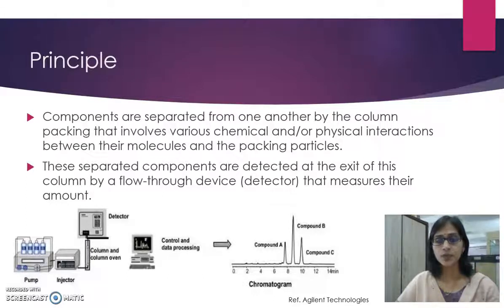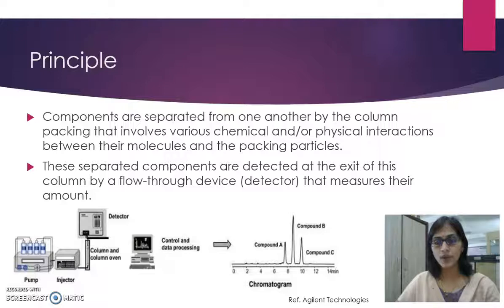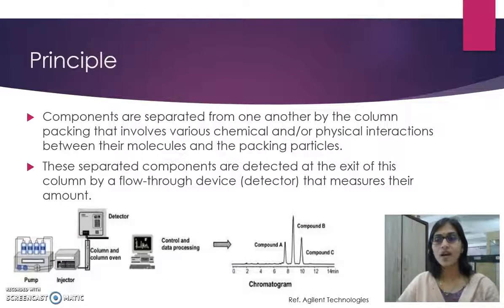High performance liquid chromatography is basically a highly improved form of column liquid chromatography. Instead of a solvent being allowed to drip through a column under gravity, it is pumped through the packed column under high pressure. The principal advantages of HPLC compared to classical column chromatography are improved resolution of the separated substances, faster separation times, and increased accuracy, precision and sensitivity.